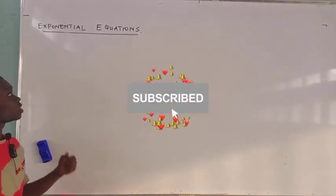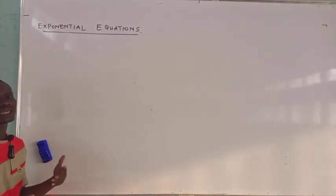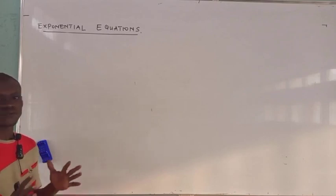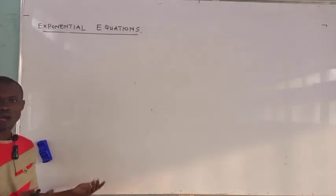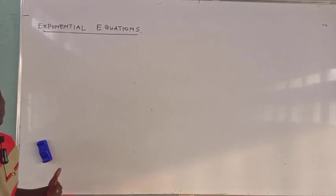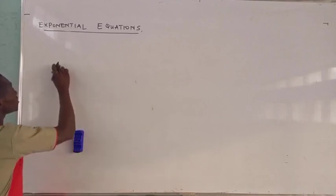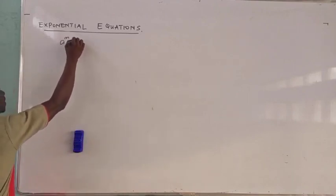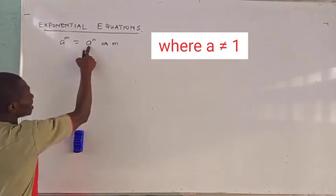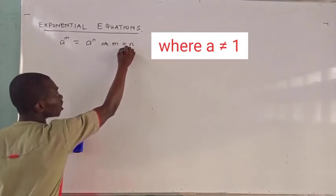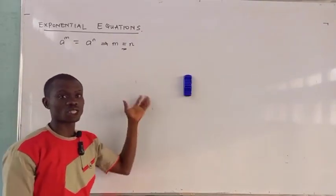In our previous video we talked about indices and we saw the rules of indices — about eight or nine sets of rules, without any specific order, that would help us navigate operations of indices. These are numbers with powers, which are also called exponents or index. One key rule is: if a raised to power m equals a raised to power n, and the bases are the same, then the powers are also the same.